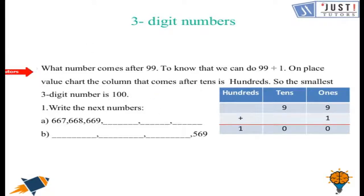So do you know which number comes after 99? To know that we can add 1 to 99. So when you add 1 to 99 on a place value chart you can see the answer which you get comes in the hundreds column. So you can say that the smallest 3 digit number is 100.